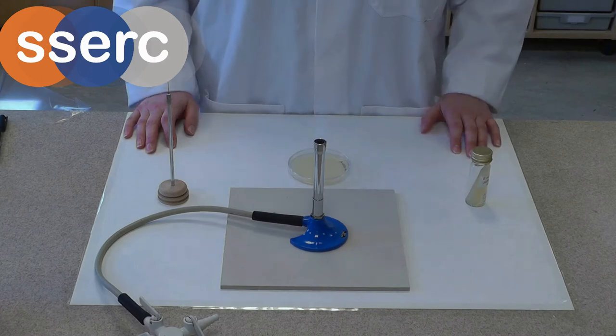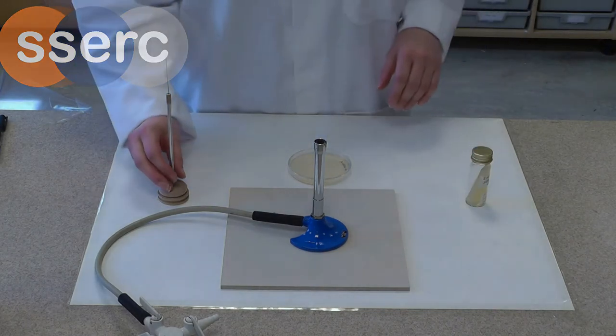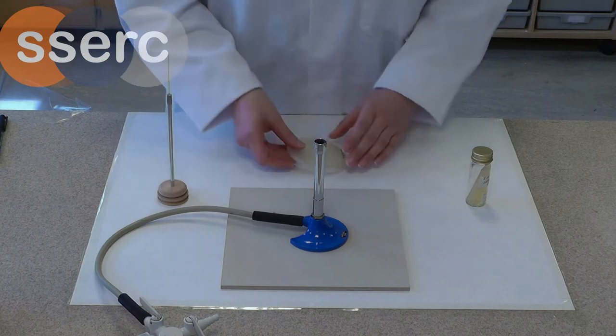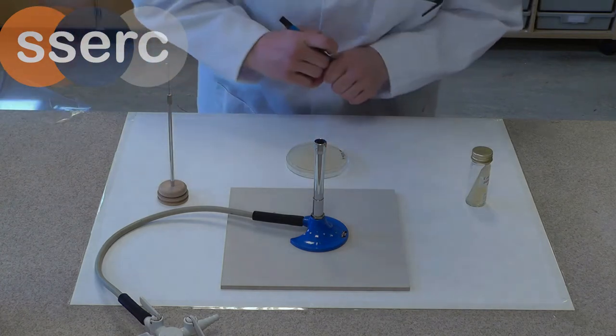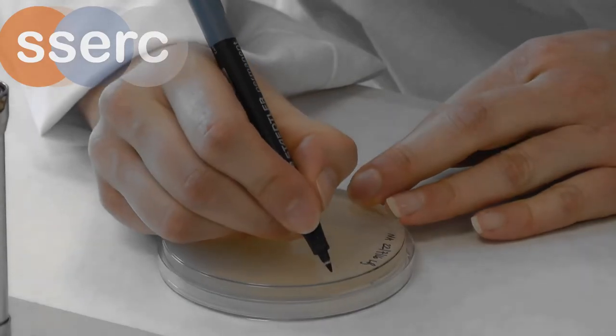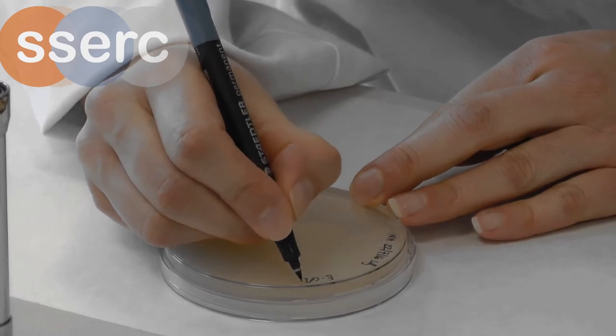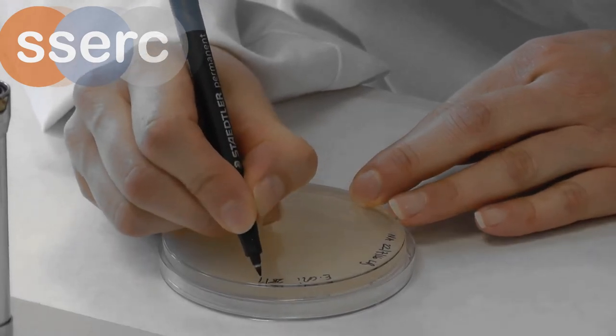Slope to Plate. First thing to do is to label the plate on the underside with your initials, the name of the organism and the date.